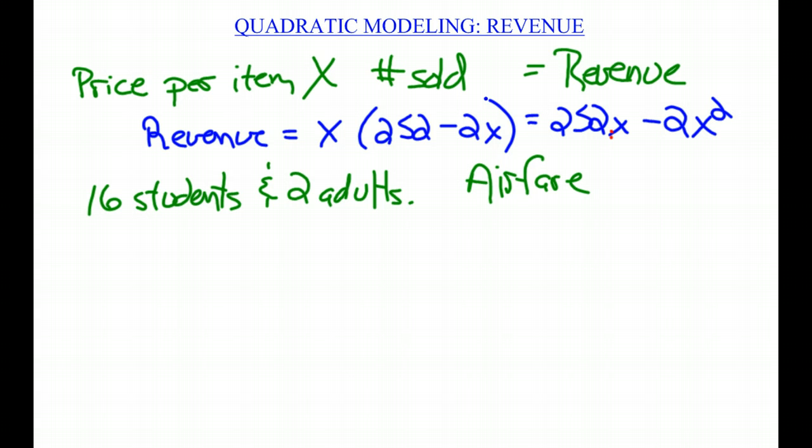The second question is, I noticed that when you sell 126 tickets, the revenue is zero. How come? Why is the revenue zero when you sell 126 tickets? Ciao for now.